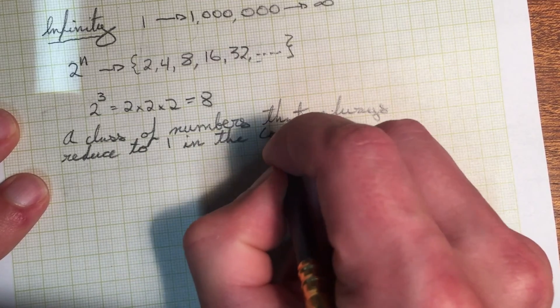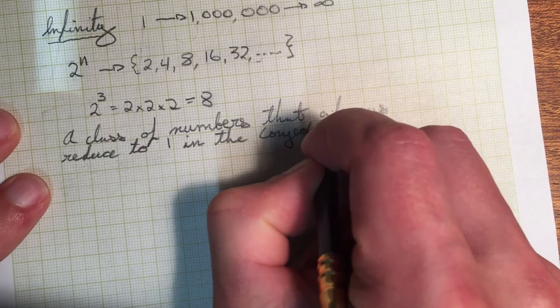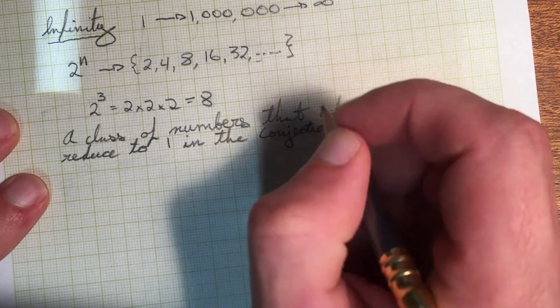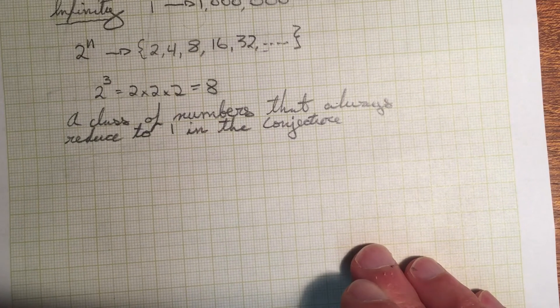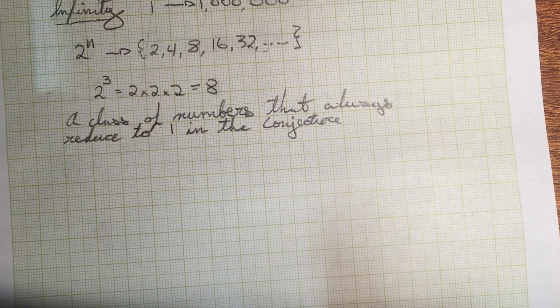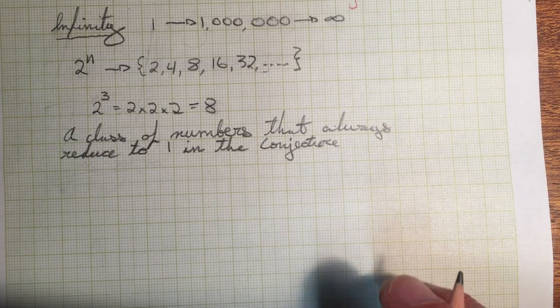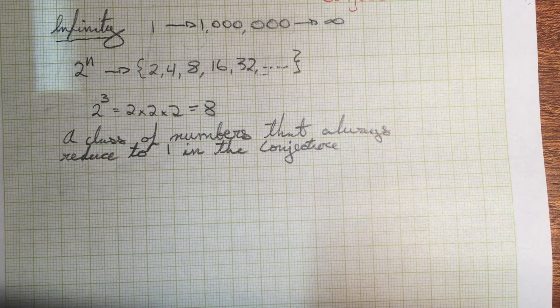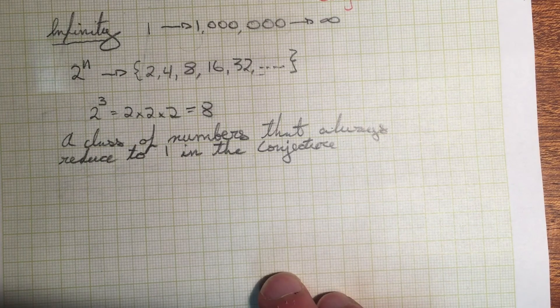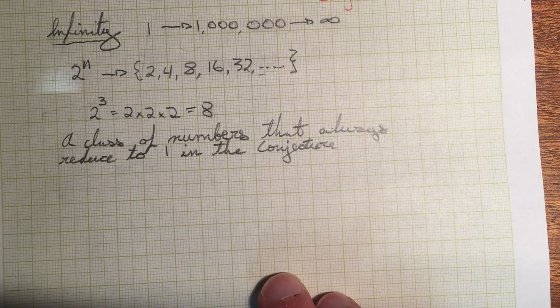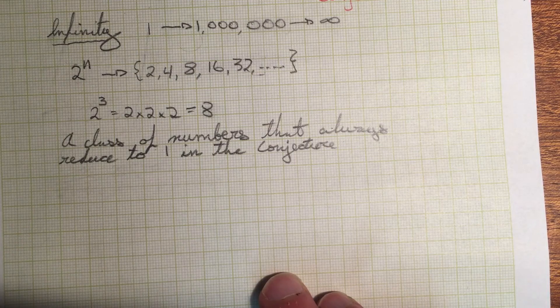So I'm gonna keep these videos short. And the next one, we'll answer the next sort of logical question, which is, well, you found an even number, or an even set, a set of even numbers that always reduce to one in the conjecture. Are there any examples of odd numbers, classes of odd numbers that always reduce in the conjecture?